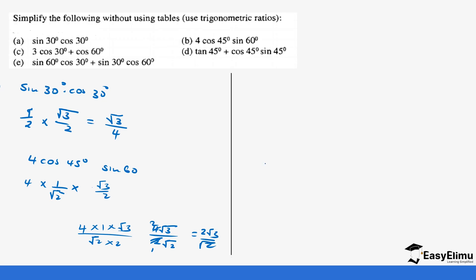And then 3 cos 30 plus cos 60 degrees. So it's 3 times cos 30, which is root 3 over 2, plus cos 60, which is a half. This gives us 3 root 3 plus 1 over 2.